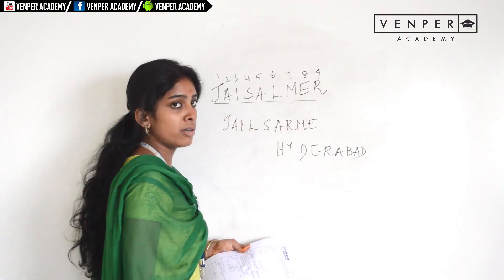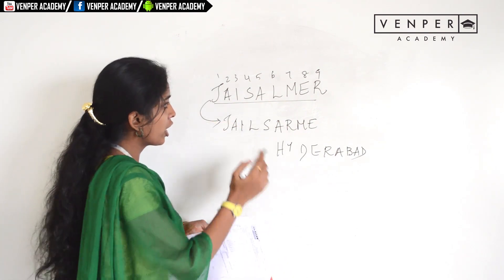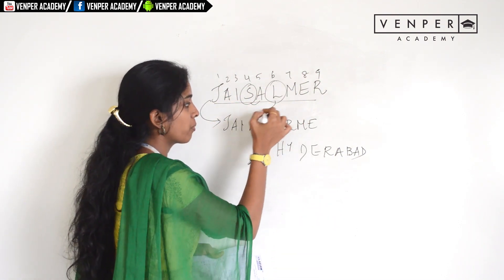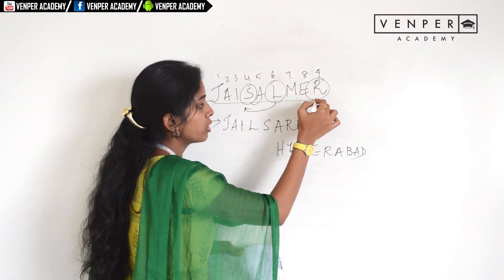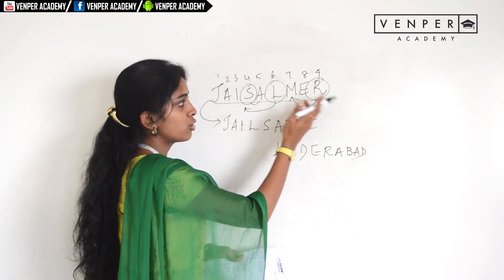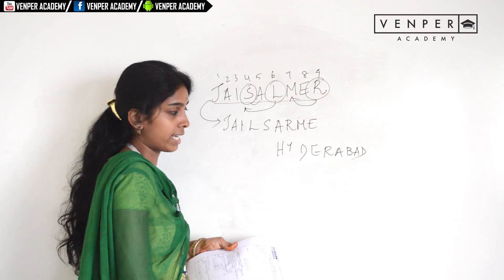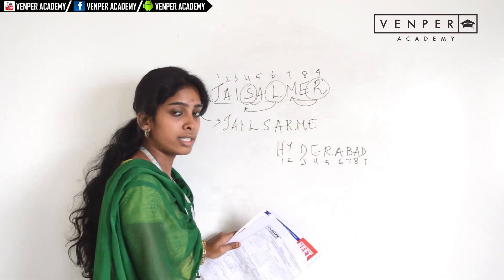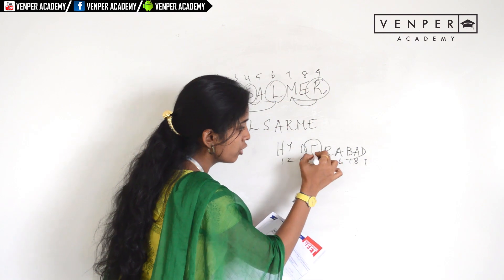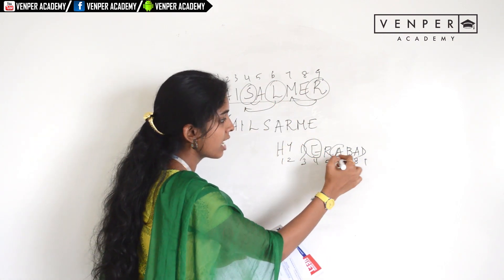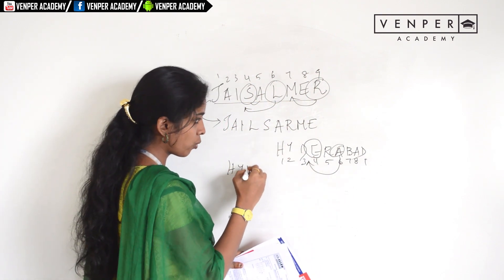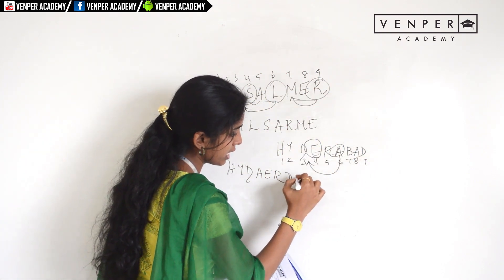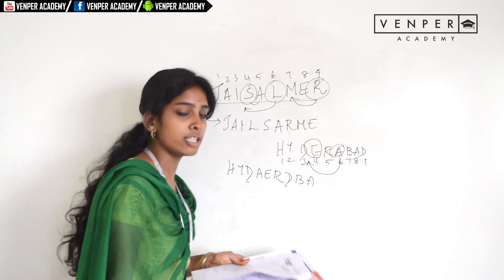Question eighteen: Jaisalmer is changed by moving the fourth letter to the fifth position, the sixth letter occupies the fourth position, and the ninth letter moves to the seventh position. Applying the same rule to HYDERABAD (9 letters): the fourth letter E moves to the fifth position, A comes in place of E, giving H, Y, D, A, E, R — and the ninth letter moves to the seventh position, giving D, B, A. This matches the first option.